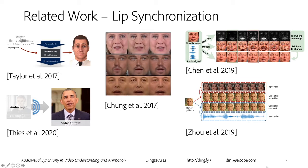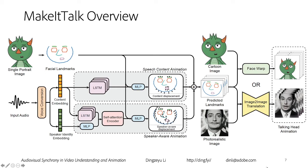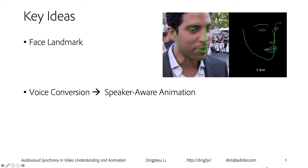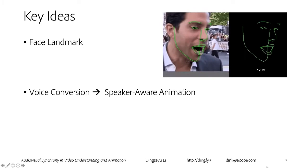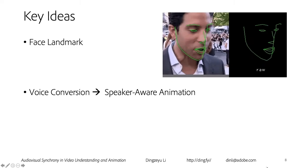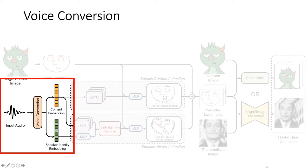Here is an overview of our project. There are two key ideas in our paper. The first is we use face landmarks as an intermediate representation. Second, we borrow ideas from the voice conversion literature to enable what we call speaker-aware animation. Unlike existing work where simple STFT or MFCC signal is used to drive the animation, we first put the audio into a voice conversion module to separate the embedding into two branches: one we call content embedding, the other is speaker identity embedding. These are standard terminology from voice conversion literature.